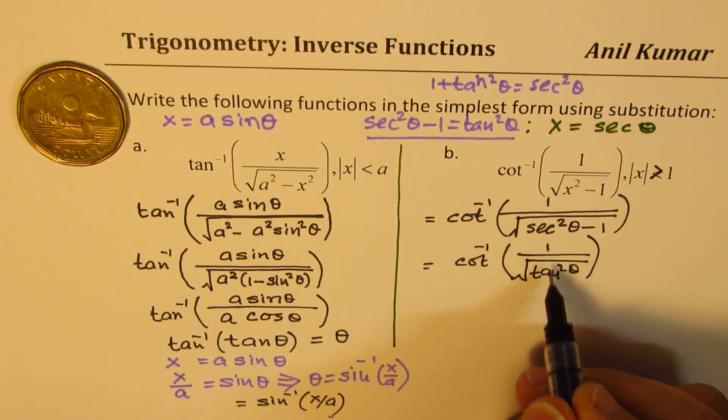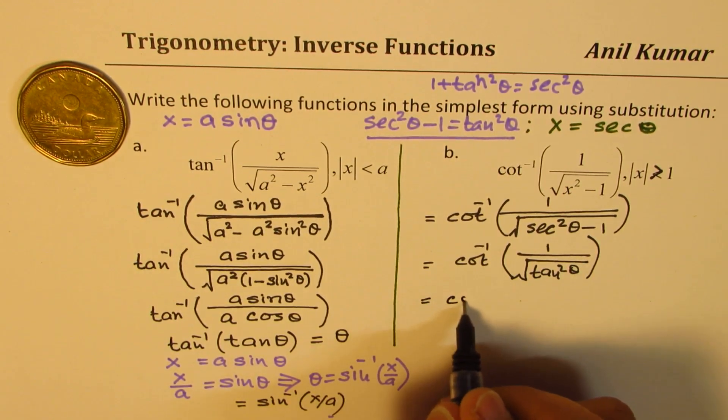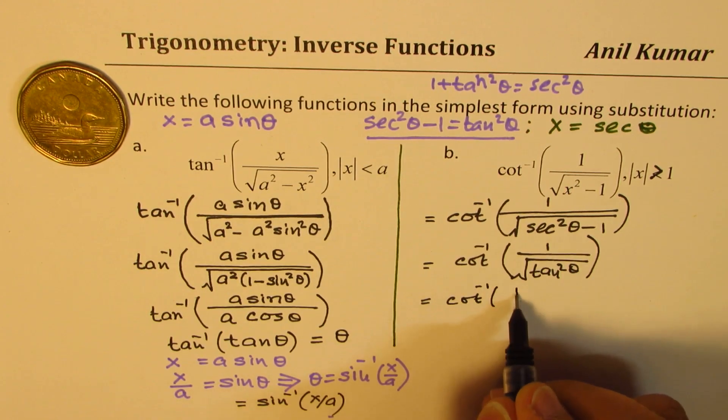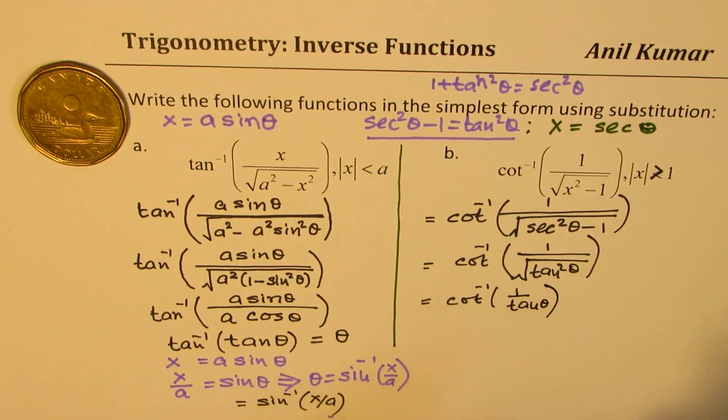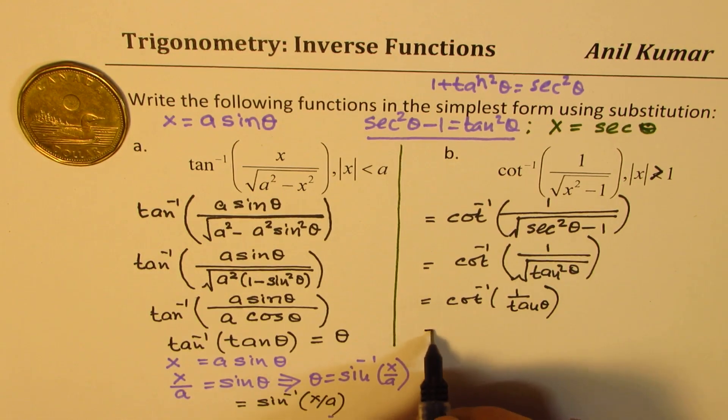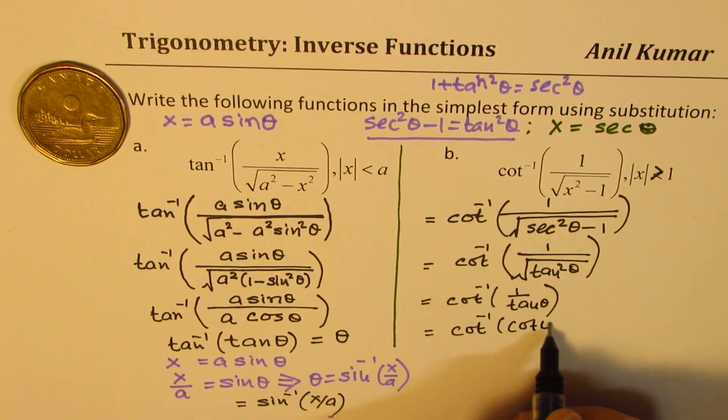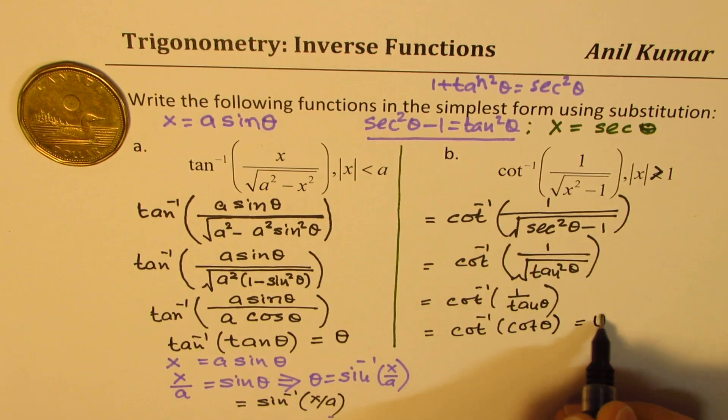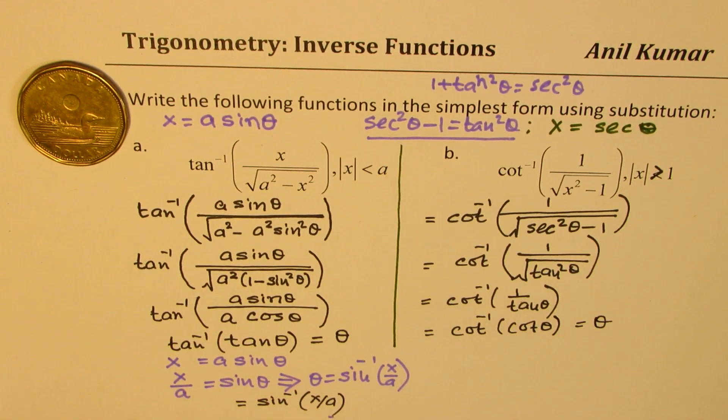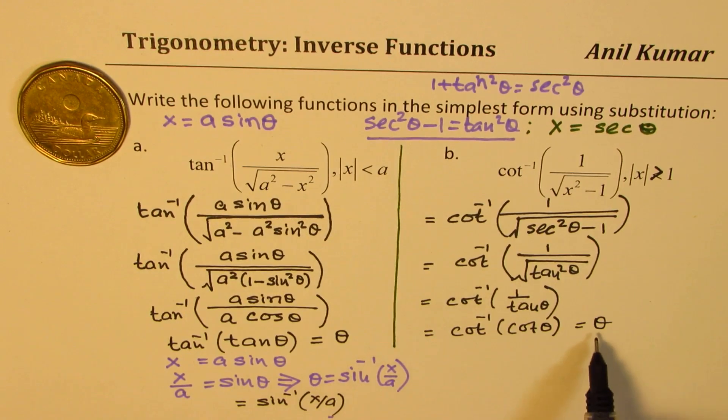Now, that is 1 over tan theta. So we get cot inverse of 1 over tan theta, which is same as cot inverse of cotangent theta, which is same as theta. So we again get our result, which is theta.